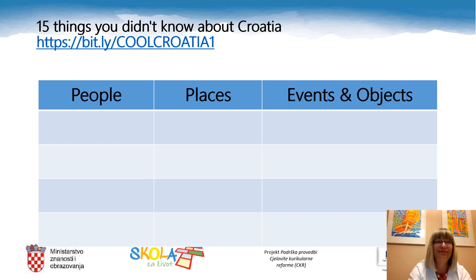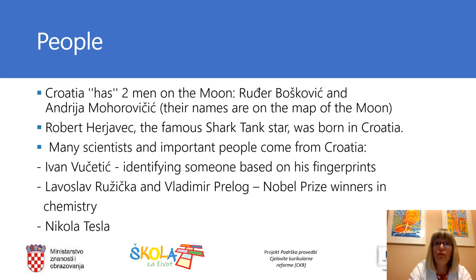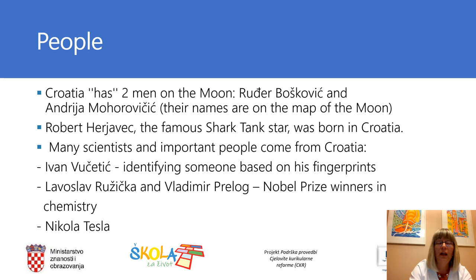Let's check now. Category People. Who do we have here? Two men on the moon — not literally, of course. Their names are on the map of the moon, and there are two scientists: Roger Bosković and Andrija Mohorovicic. After that, we have Robert Herjavec, the famous Shark Tank star who was born in Croatia. You already know that many scientists and important people come from Croatia. Some of them are Ivan Vucetic, a criminologist and anthropologist who pioneered the method of identifying someone based on his fingerprints. Then two Nobel Prize winners in chemistry, Lavoslav Ružička and Vladimir Prelog. And the great Nikola Tesla, a physicist and inventor.